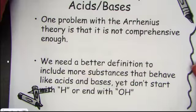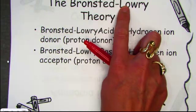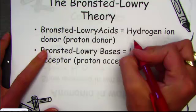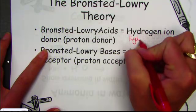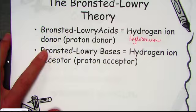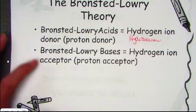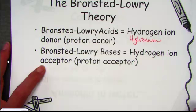Bronsted and Lowry — a hyphenated name because two chemists were given the honor of naming this theory — broadened the definition. According to the Bronsted-Lowry theory, acids are hydrogen ion donors, also called proton donors. Bases are proton acceptors, or hydrogen ion acceptors. Acids donate; bases accept. Record these definitions into your note pack.